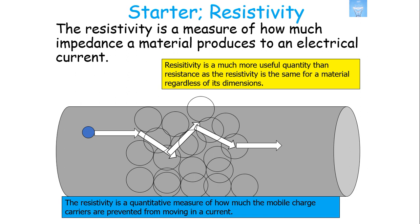Resistivity is a measure of how much impedance a material produces to an electrical current. It's actually a lot more useful than resistance, because resistivity is the same for a material regardless of its dimensions. The resistivity of a certain material, such as iron, copper, or nichrome, is the same regardless of whether it's a wire, a cylinder, a square, or a cube.